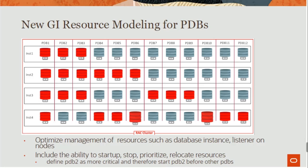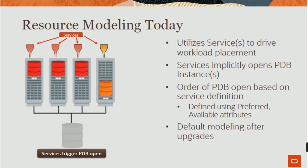Here is a pictorial of a RAC cluster — Instance 1, Instance 2, Instance 3, Instance 4 — with Instance 1 having PDB1 through PDB12. How will the PDBs optimize the GA resources modeling? Services trigger PDB open; utilizes services to drive workload placement; services implicitly open PDB instances. Order of PDB open is based on service definition, defined using preferred/available attributes. Deport modeling after upgrades.